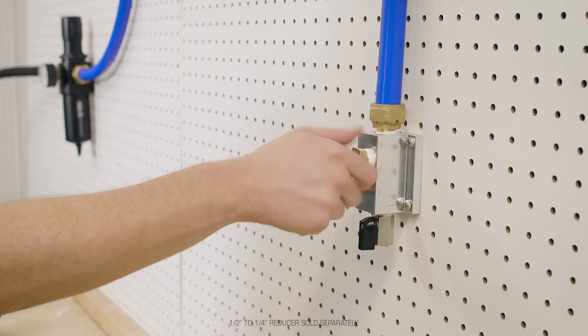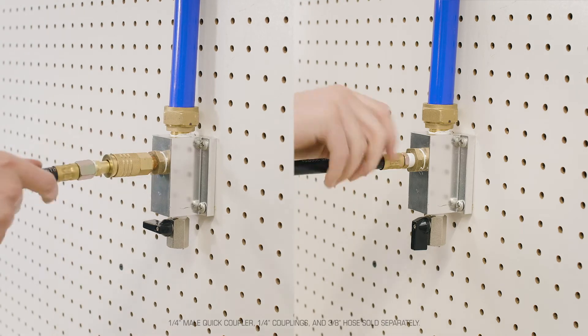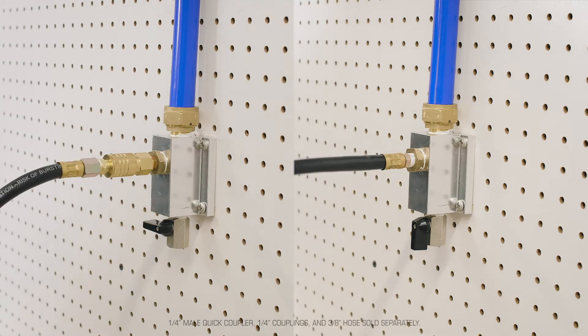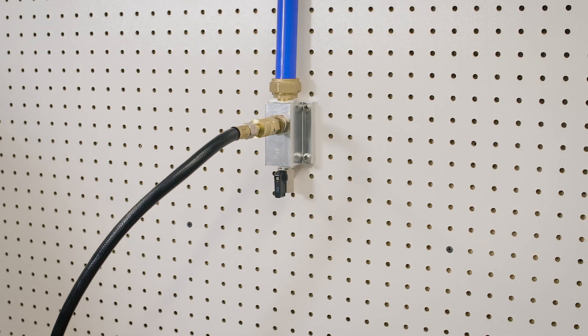Now you can personalize your system by adding an optional quick coupler to the outlet manifold or by directly hooking up a hose. Note, all vertical drops in the system should be drained daily or after each use.